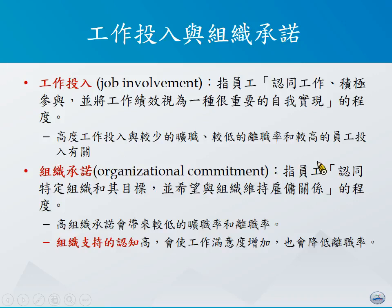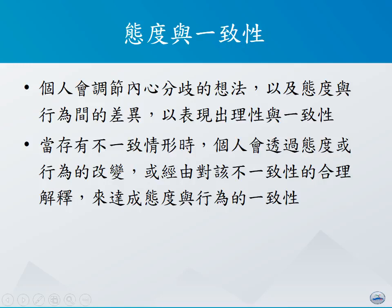所谓的组织承诺，是指员工认同特定组织和其目标，并需要与组织维持雇佣关系的程度。高的组织承诺会带来较低的旷职率与离职率，组织支持的认知越高，工作满意度也会增加，从而降低员工的离职率。然而，很多时候员工的态度与行为之间并没有一致，个人会透过态度或行为的改变，或对不一致做出合理解释，来达成态度与行为的一致性。